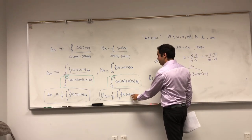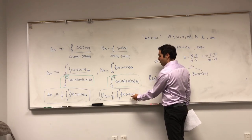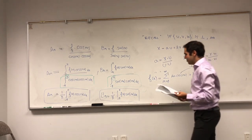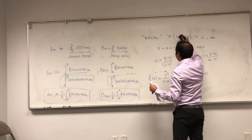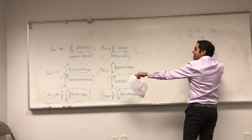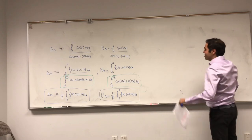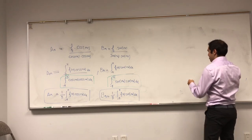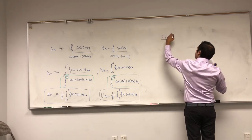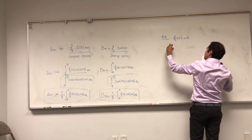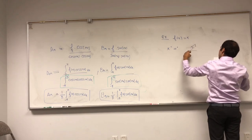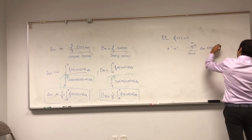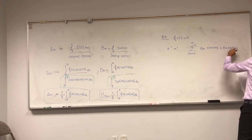In general, over an interval of length t, the 1/pi factor becomes 1/t. Now let's do a quick application. Take f(x) equals x. We want to write x as the sum from m equals 0 to infinity of am cosine(mx) plus bm sine(mx).